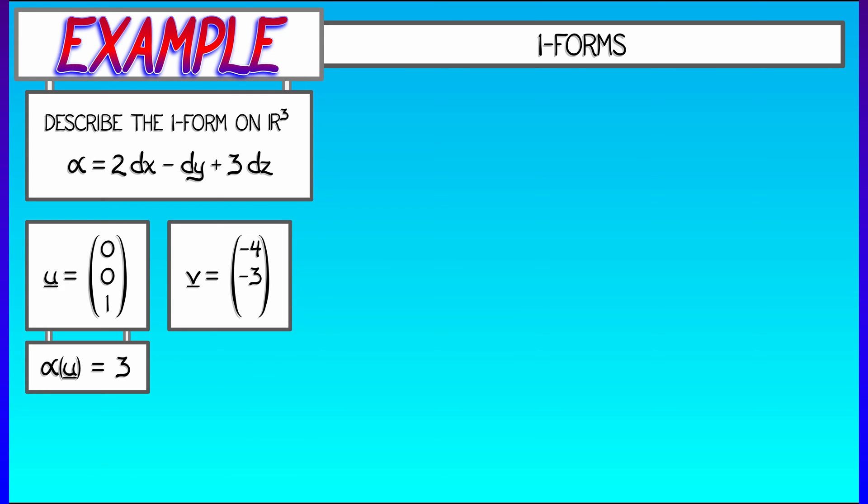Let's feed it a different vector. Let's say v given by -4i - 3j + k. Then alpha takes twice the x component minus the y component plus 3 times the z component. That's negative 8 plus 3 plus 3, that is negative 2.